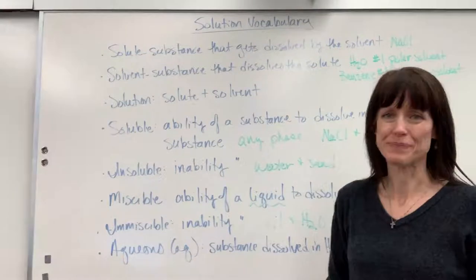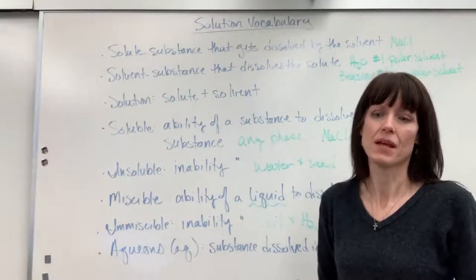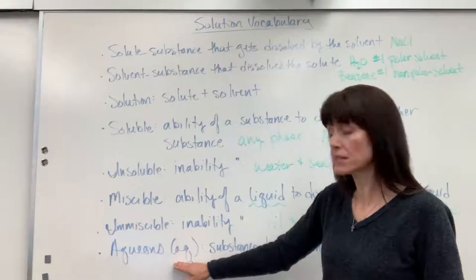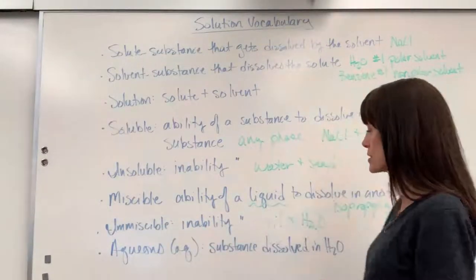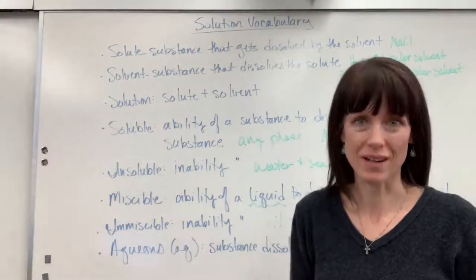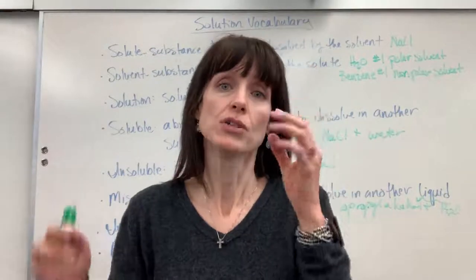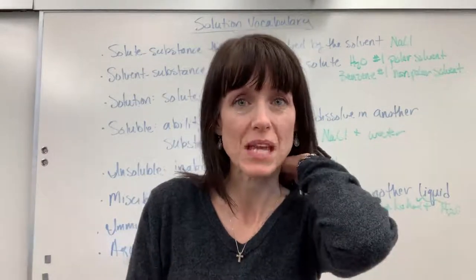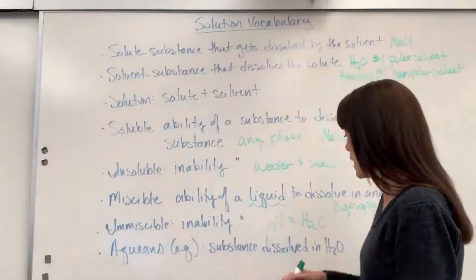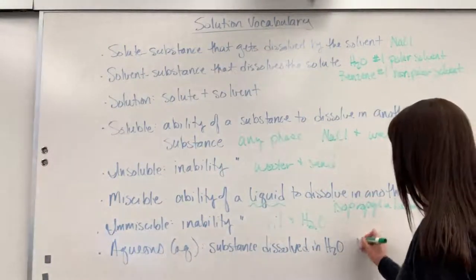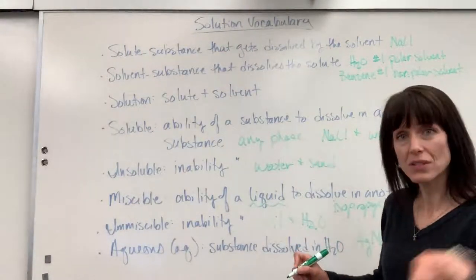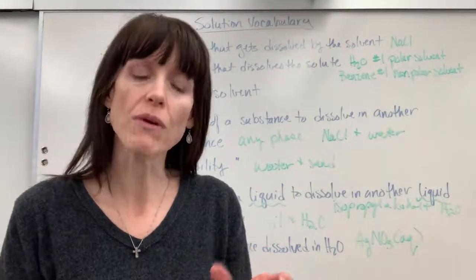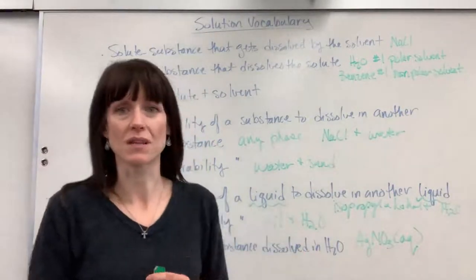The word aqueous is one we use a lot. It's a shorthand that helps us write equations quickly with an inherent understanding. We abbreviate it with (aq) in parentheses and put it as a phase in chemical reactions. It means a substance has been dissolved specifically in water. So if I have two aqueous solutions, I have two substances dissolved in water that I'm going to mix to form a reaction — probably a solid precipitate. For example, silver nitrate dissolved in water would just get that (aq) in parentheses, and we don't have to write H₂O in the reaction; it's understood.